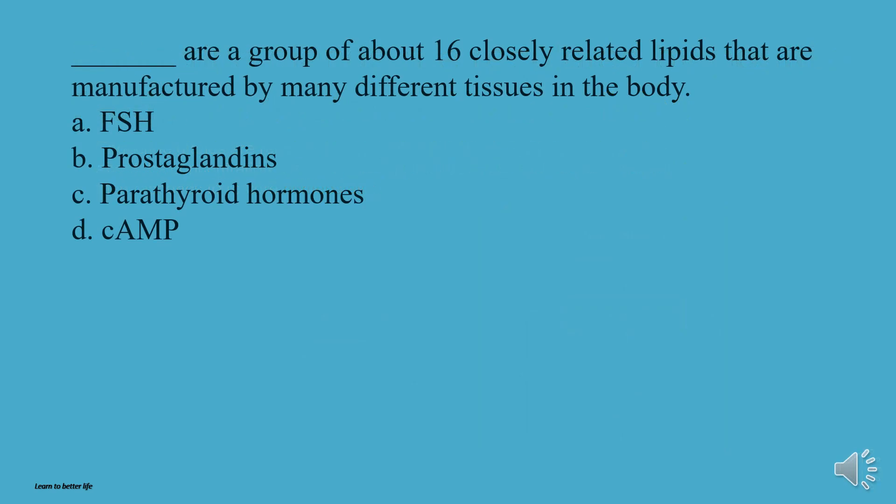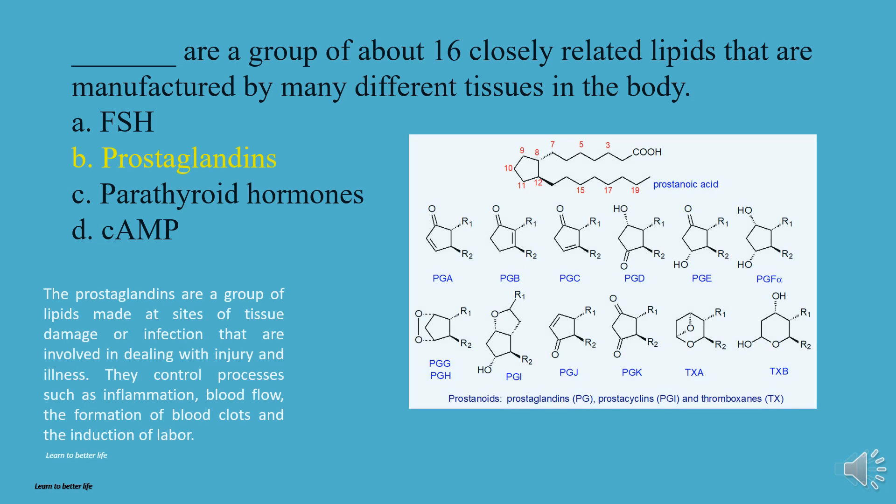What are a group of about 16 closely related lipids that are manufactured by many different tissues in the body? A, FSH. B, Prostaglandins. C, Parathyroid Hormones. D, cAMP. The answer is B, Prostaglandins.